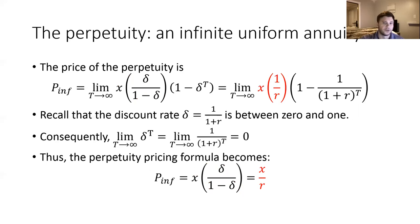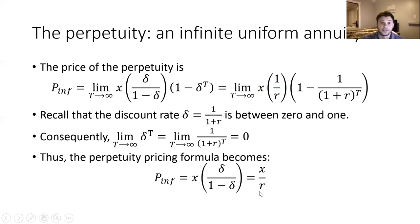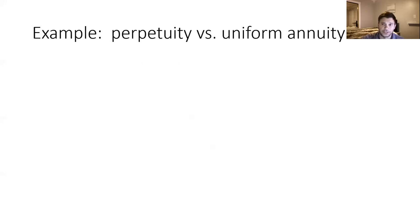That gives us a pretty simple form for the perpetuity pricing formula — the infinite annuity case. This term in red is what is left when we take the limit using the discount factor expression, and this other term in red is what is left over when we use the interest rate version of the pricing function. That last term at the very bottom is just X divided by R — that is how you would calculate the price of a perpetuity that pays you X dollars per period forever at an interest rate of R.